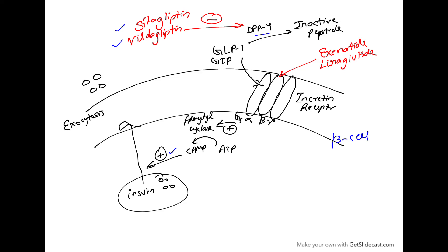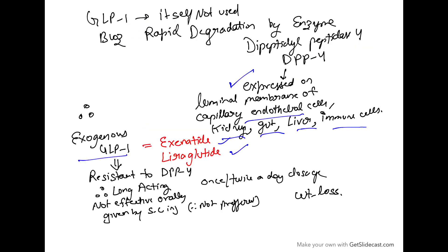As shown in the diagram, exenatide and liraglutide act on the incretin receptors — G-protein coupled receptors — activate adenylyl cyclase, produce cyclic AMP, and then cause insulin exocytosis. Exenatide and liraglutide are resistant to the DPP-4 enzyme; therefore, these are longer-acting versions with once or twice daily dosing. The problem is they are not effective orally — they must be given by subcutaneous injection, which is why they are not very much preferred. Their action on weight is that they promote weight loss.